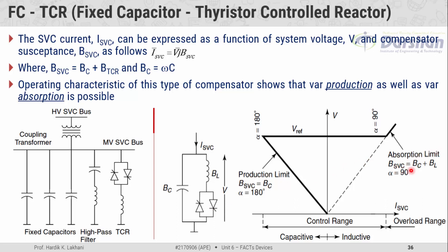When alpha equals 180 degrees, the antiparallel connected thyristor pair is considered as an open circuit element, so there is no current flow through the inductive branch. The SVC current only flows through the capacitive branch, and the net susceptibility offered by the SVC equals B_C. Since all capacitive branches are directly connected without any control, maximum reactive power is produced into the system, and the limit corresponding to alpha equal to 180 degrees is known as the production limit.